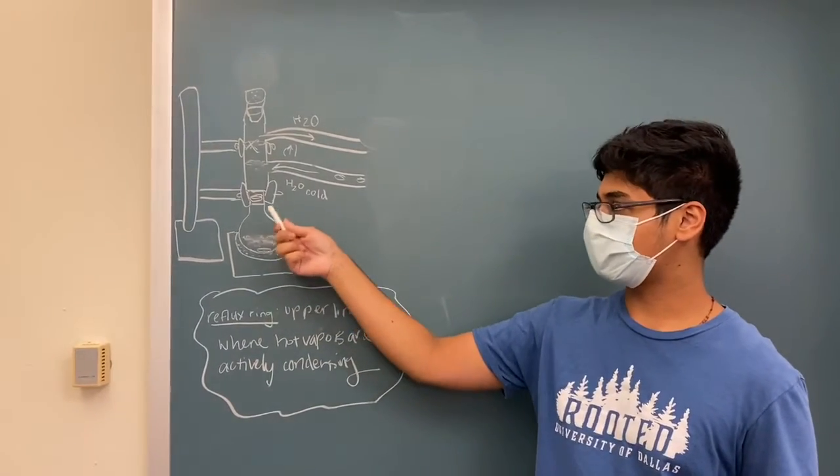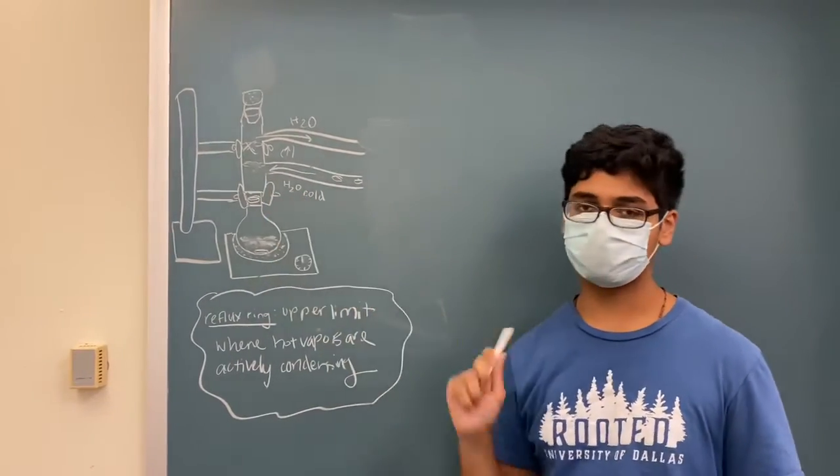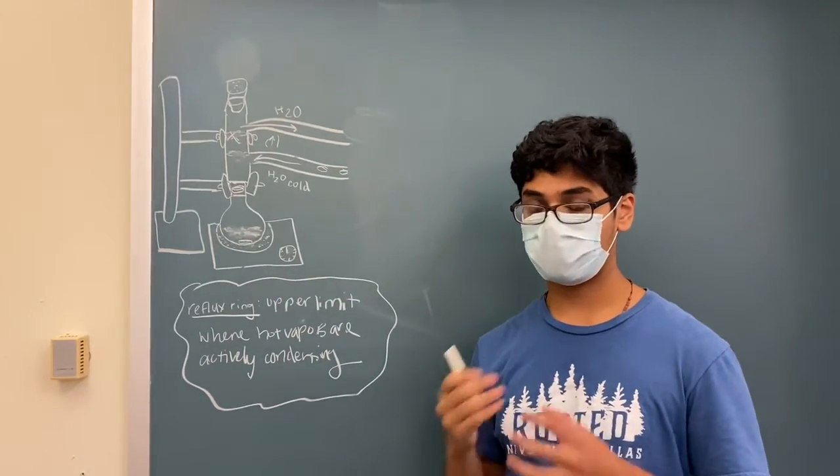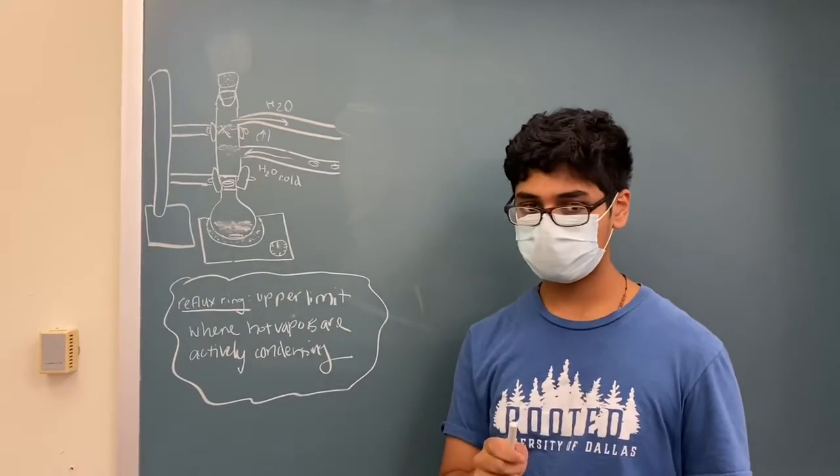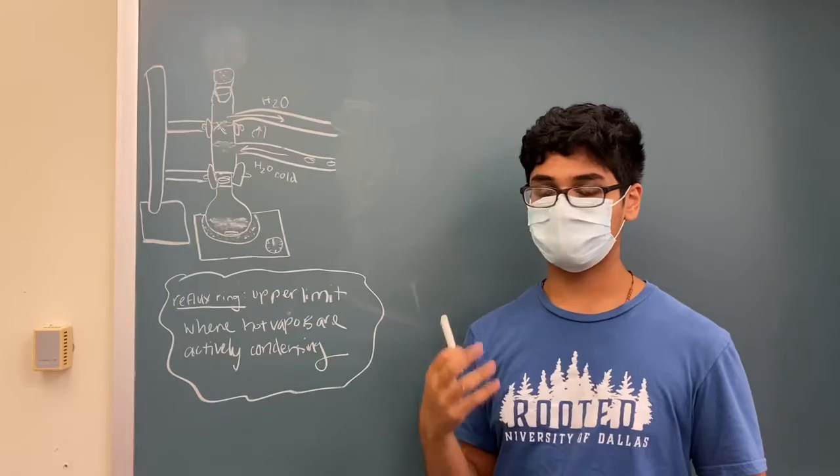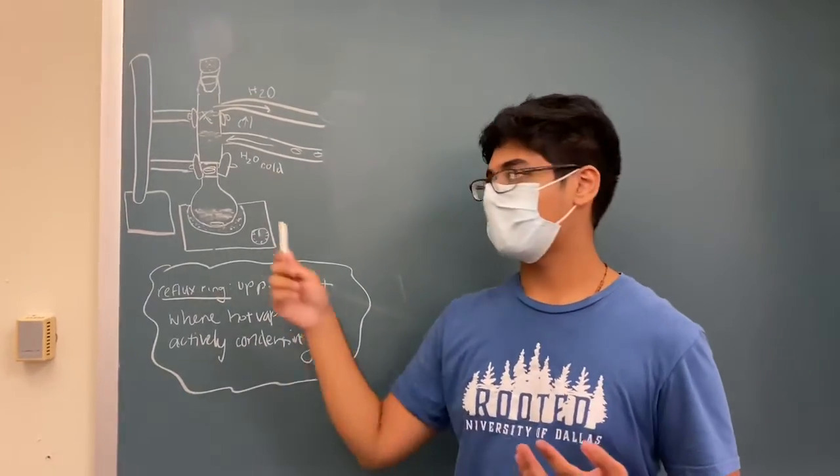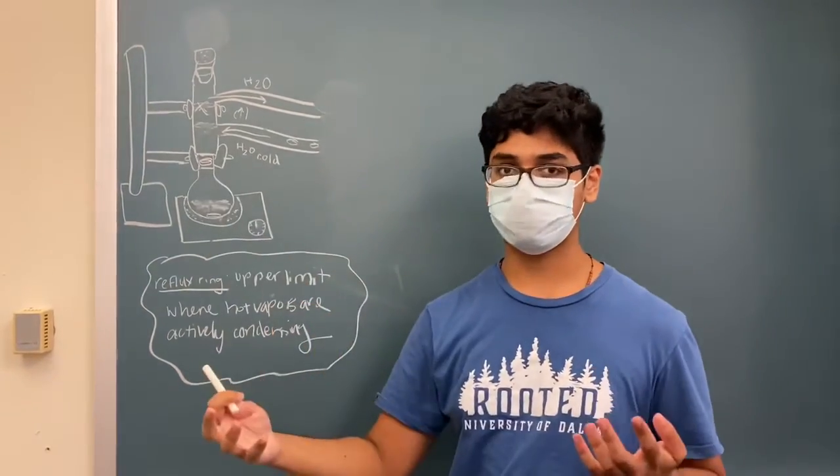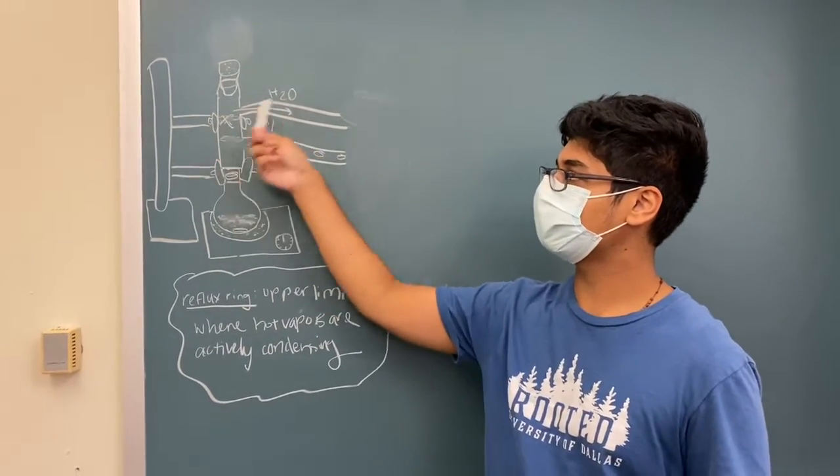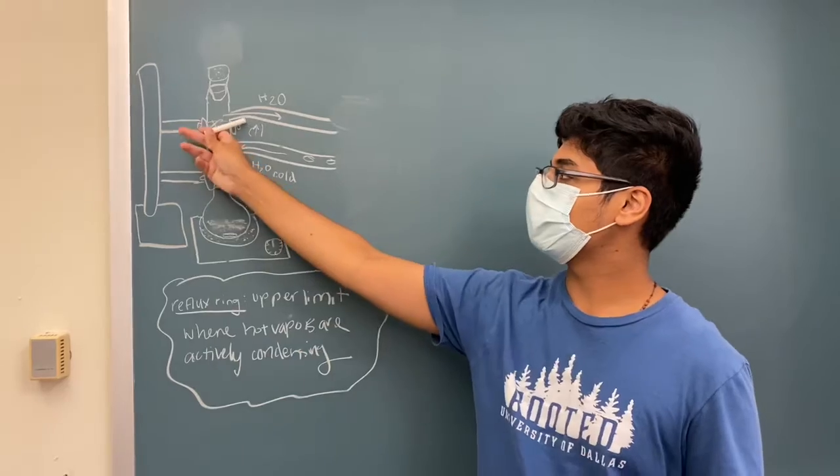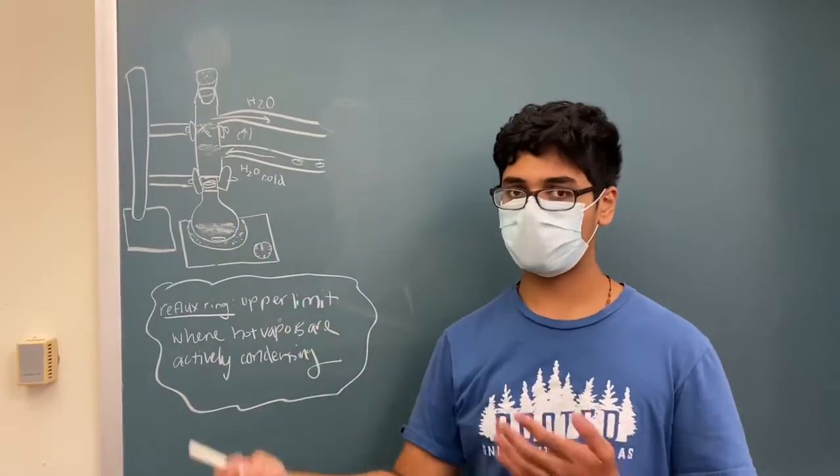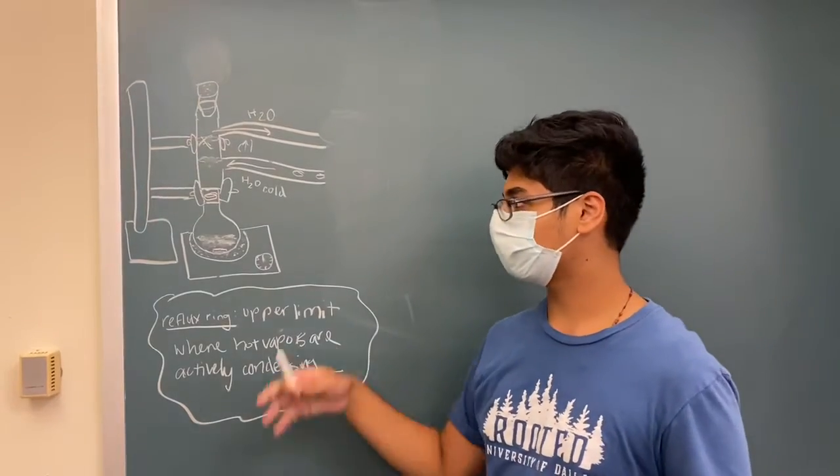Next you should attach the round bottom flask to a vertical condenser column with a metal clamp so that it allows for greater structural support and integrity. Do not use a plastic clip because this is going to be a heating experiment so there's a very good chance that it will melt and the vapors can escape and possibly ignite. Once you attach it with the clamp, attach another metal clamp around the middle part of the vertical condenser column and attach that to another ring stand to allow greater support and stability for the whole apparatus.